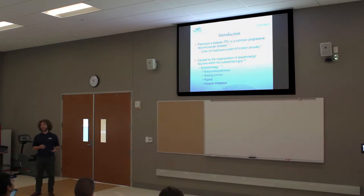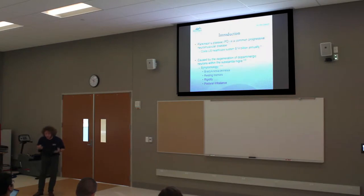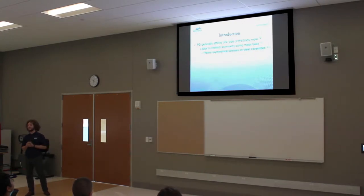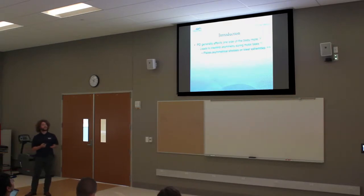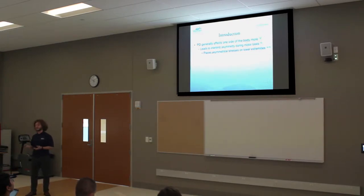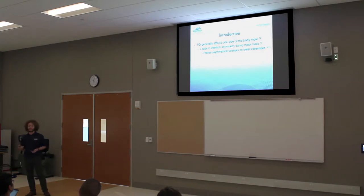And then postural imbalances — some of those signs can be an arched-over posture, increased flexion of the thoracic spine and the cervical spine. Generally, Parkinson's affects one side of the body more than the other, and this leads to interlimb asymmetry, which is asymmetry between the two limbs during motor tasks, placing asymmetrical stresses on the lower extremities such as in cycling and walking. It's task dependent, so it can affect upper extremities too, depending on the task.